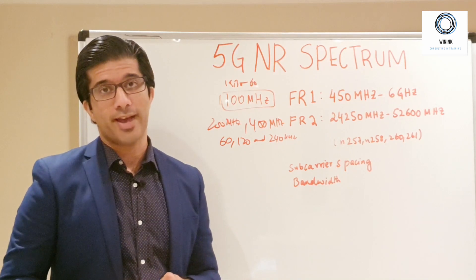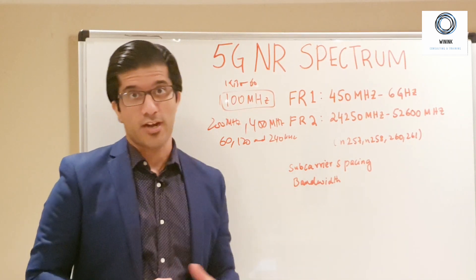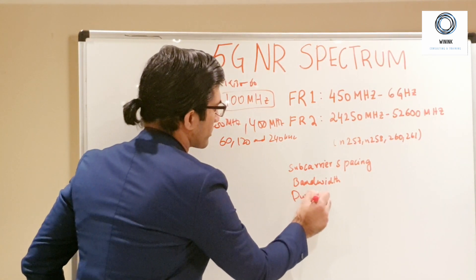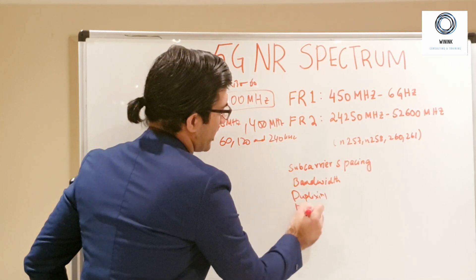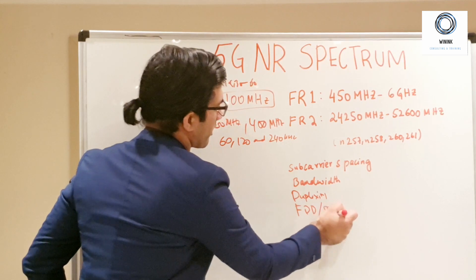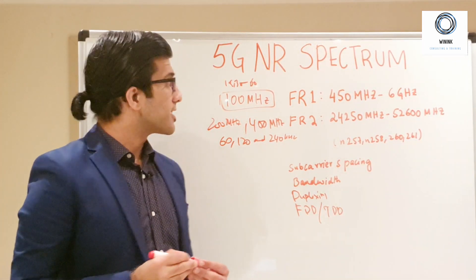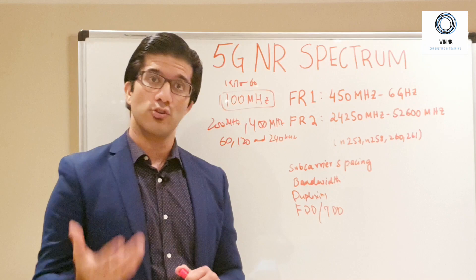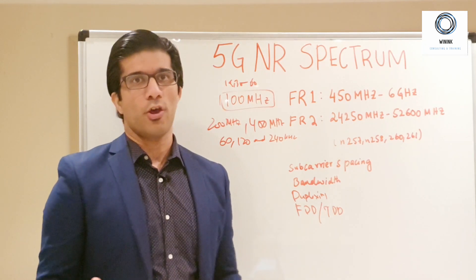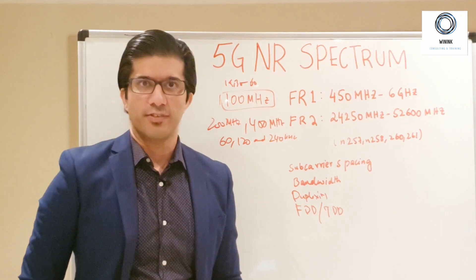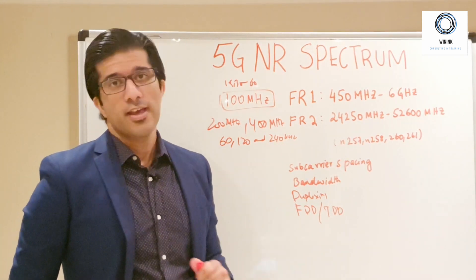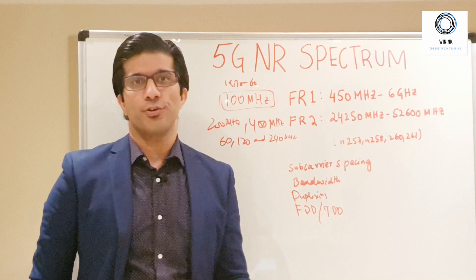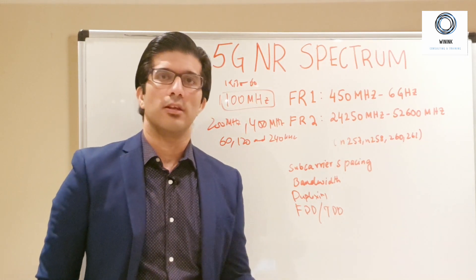The third aspect is the duplexing mode — either FDD or TDD. FR1, which ranges from 450 MHz to 6 GHz, is available in both Time Division Duplex and Frequency Division Duplex modes. FR2, the millimeter wave range, is only available in TDD mode as per Release 15. So if you want to deploy millimeter wave, the only available duplexing mode is TDD.